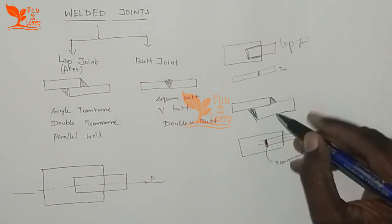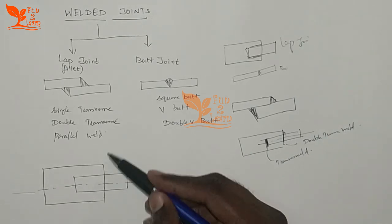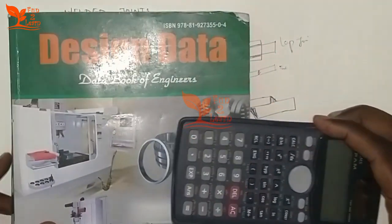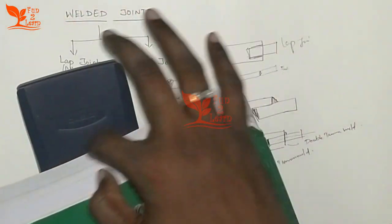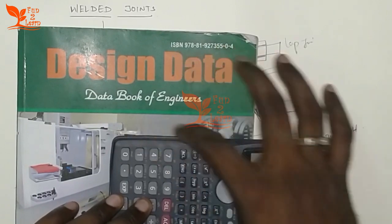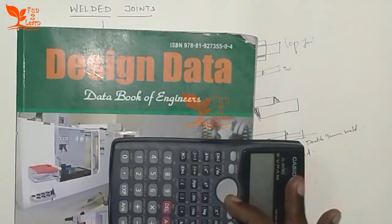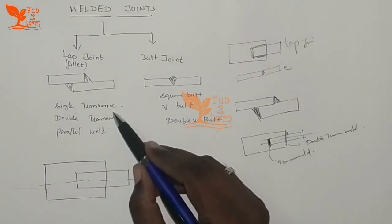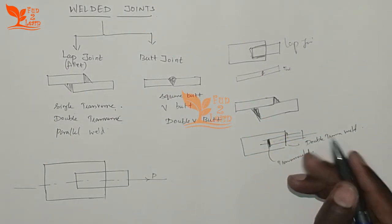When we add side welds running parallel to the load direction, this is called a parallel weld. When there are welds on both ends (both sides), this is called a double transverse weld. So the lap joint classifications are single transverse weld, double transverse weld, and parallel weld.